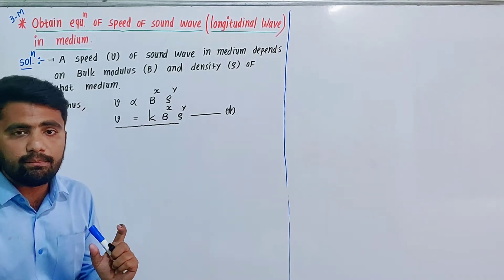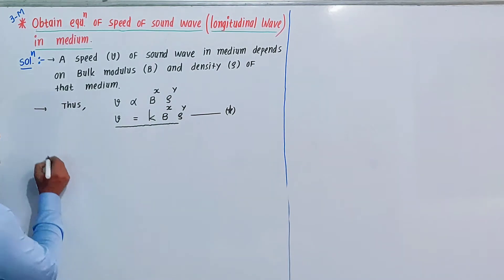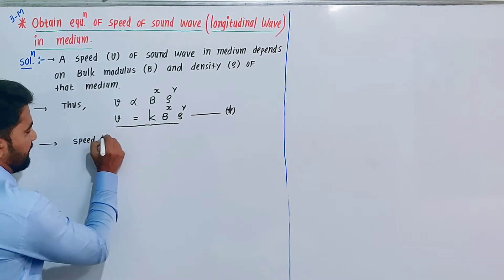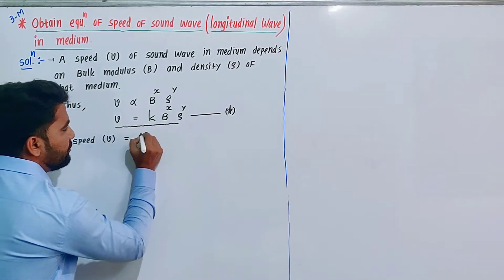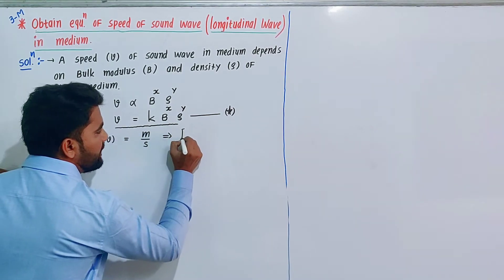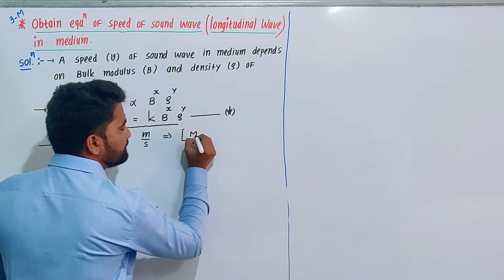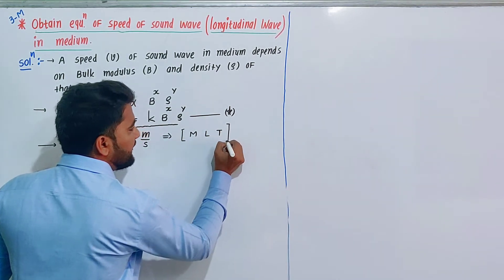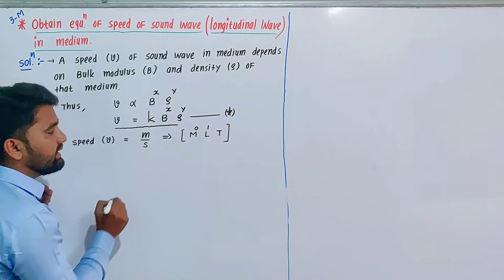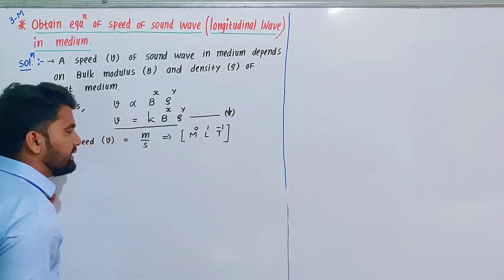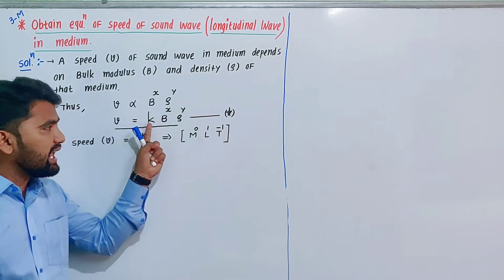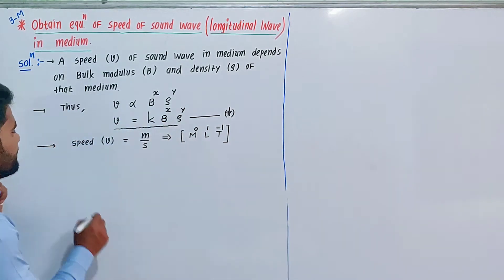Now dimensional formulas from chapter 2. First, speed or velocity, unit is meter per second. Dimensional formula in MLT form: M^0 L^1 T^-1, that's the dimensional formula.